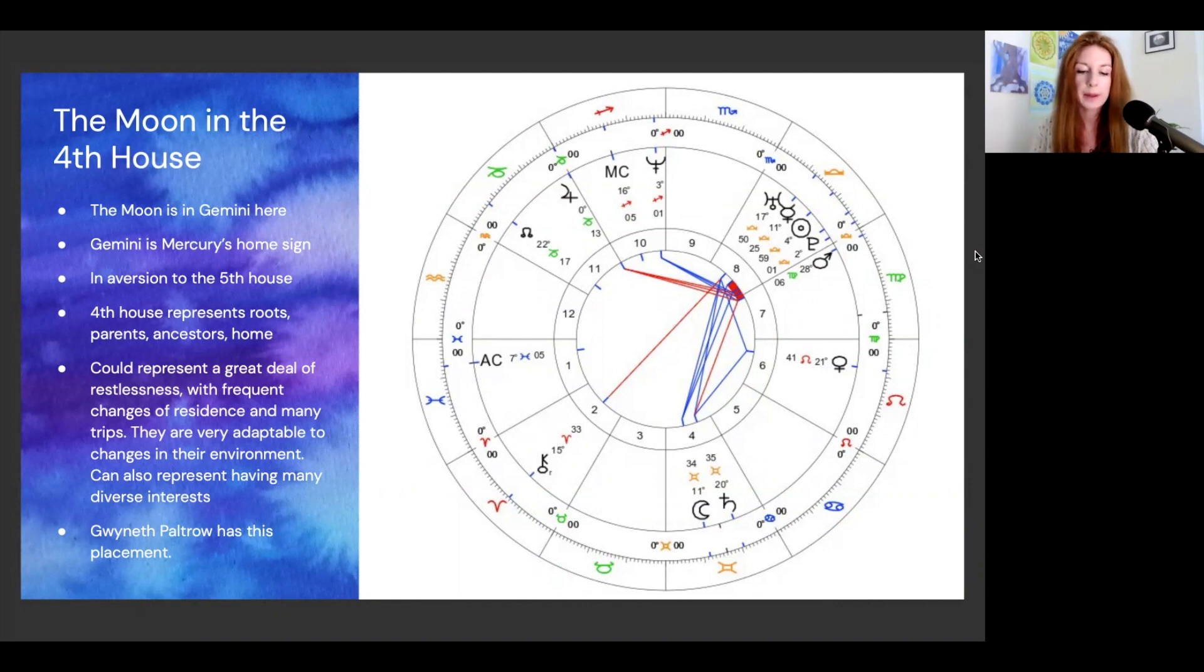Gwyneth Paltrow has this placement. That's whose chart this is. An actress of course, but also dabbles in other industries, most notably her lifestyle brand Goop, which is famous for touting pseudoscientific claims. The moon is also in a perfect trine to Mercury, which is helpful. This speaks to an open-minded quality, diverse interests. Even in her early life, she was raised by parents of different faiths, so celebrated both Jewish and Christian holidays, which again reflects this kind of diversity, flexible beliefs in her early life.